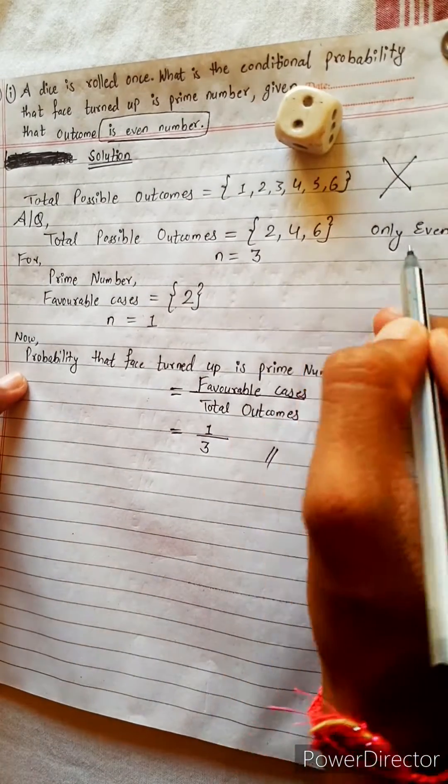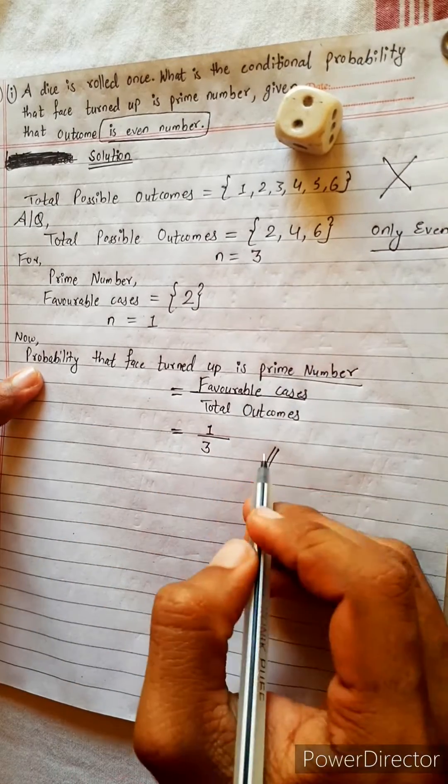So we got 2, and 2 is an even number also and a prime number also.